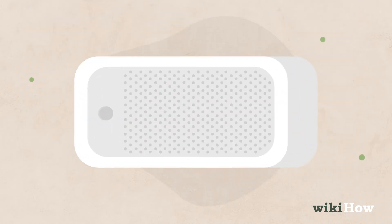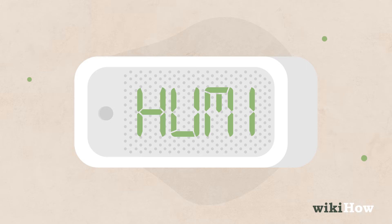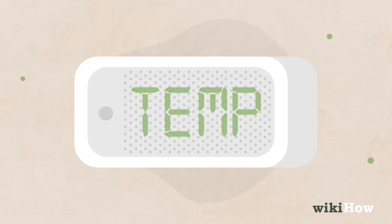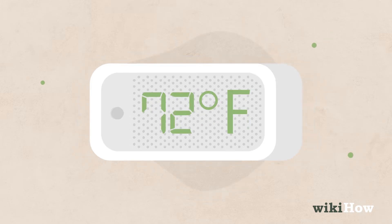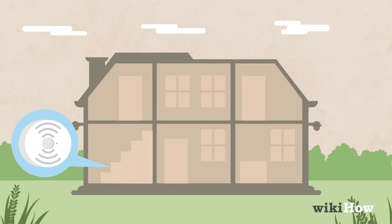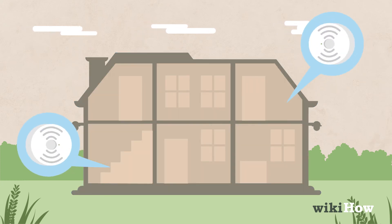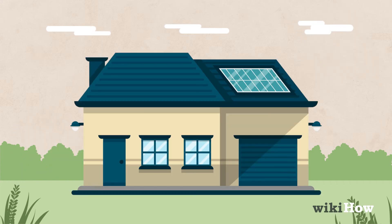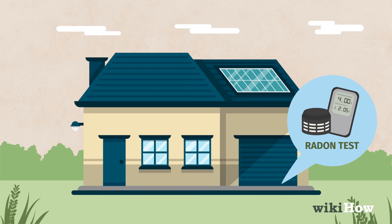An air quality monitor will check humidity and temperature levels, too. You should also install carbon monoxide detectors on every floor of your home, so you're alerted to any leaks. You can also use an at-home radon test to check your home for radon contamination.